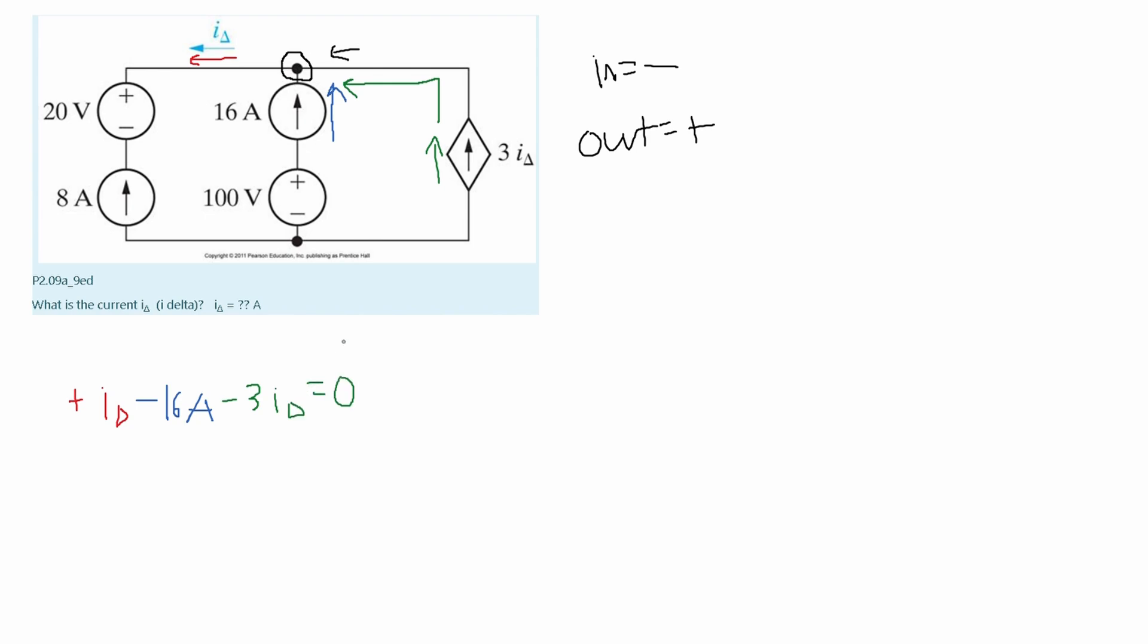Since it's going into our node we're going to have a negative three I delta and this all has to equal zero because the sum of everything that hits the node needs to equal zero.